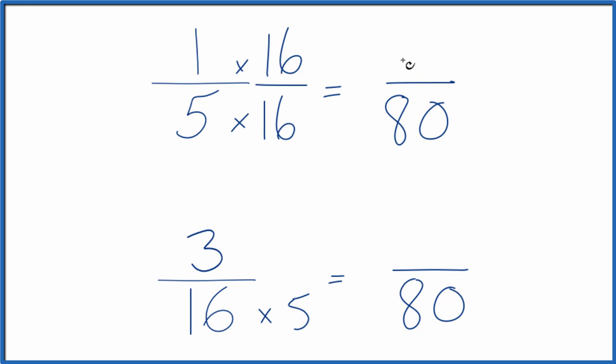1 times 16 is 16. And 16 eightieths is equivalent to 1 fifth. They have the same value. Down here 3 times 5 over 5, that's 15 over 80.